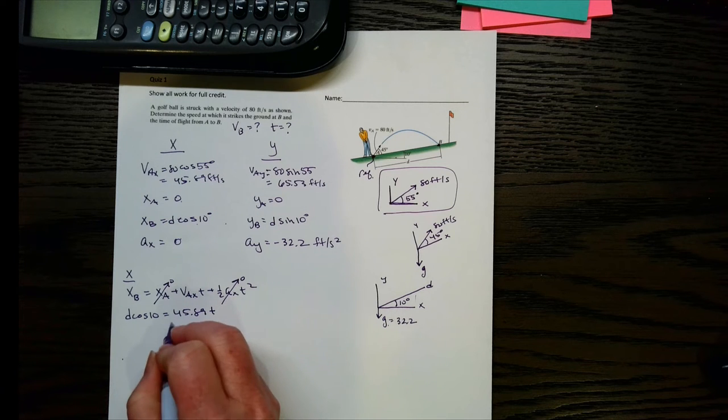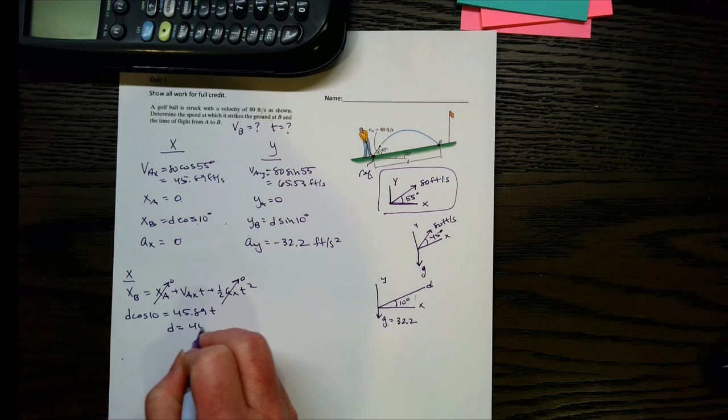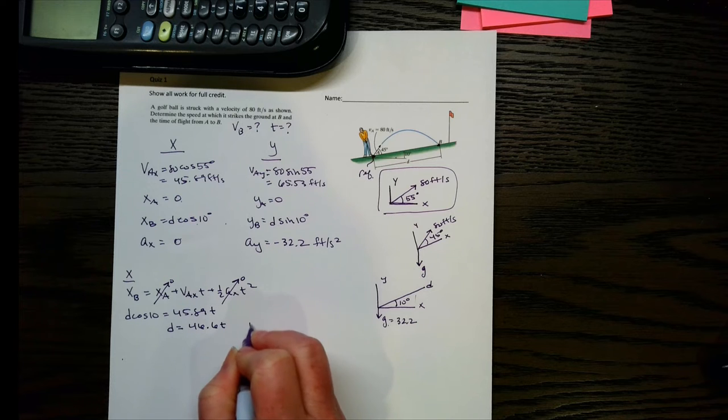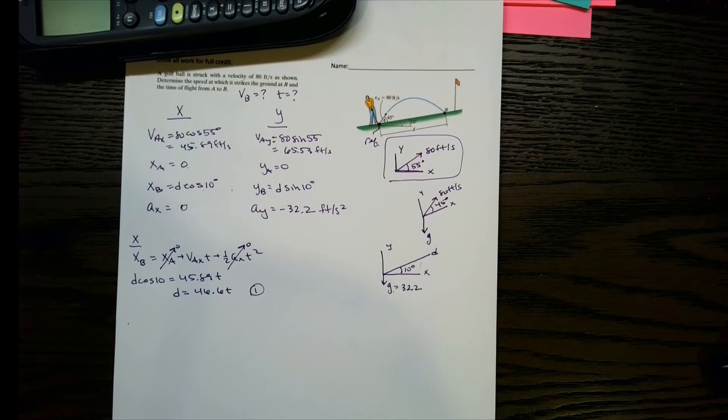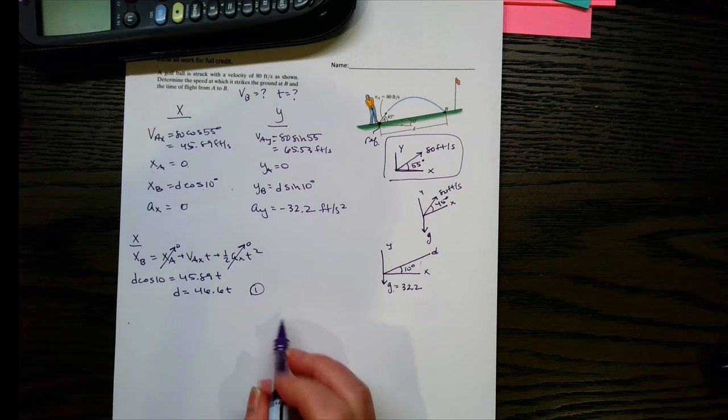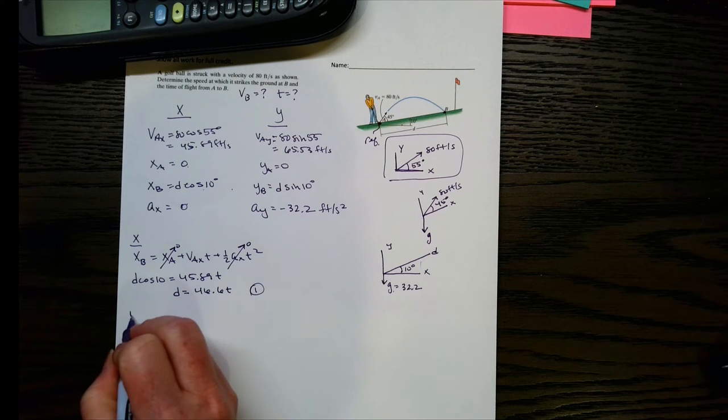vax is 45.89 times t. And let's solve this for d. So it's 46.6 t. Let's call it equation 1. And now let's go to the y direction because this is all we can get from the x direction.